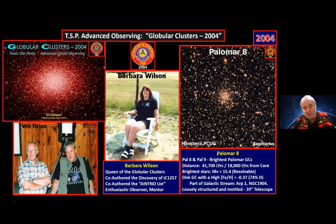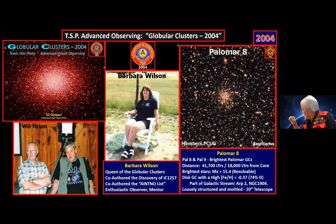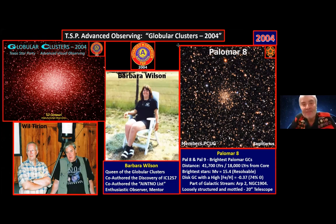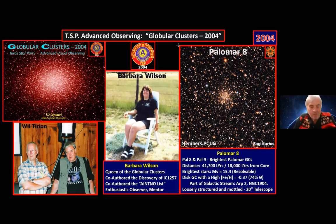Also — an asteroid has been named for Barbara: 63307 Barbara Wilson. It reaches magnitude 18.2 in December this year, so that's an observing challenge for you — observe asteroid Barbara Wilson visually. Larry helped write the citation; it sat in the queue for a long time but it has come through.